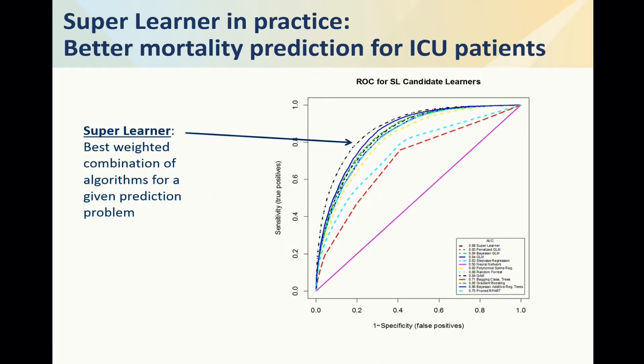We also use the super learner in all kinds of applications, such as getting better predictions of mortality in the intensive care unit. This was an article in The Lancet where dramatic gains are achieved relative to the kinds of predictions people use these days.